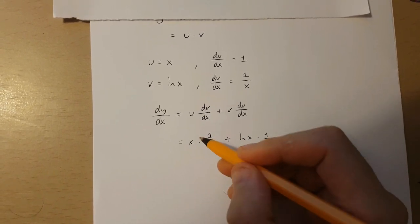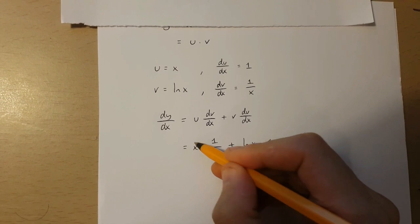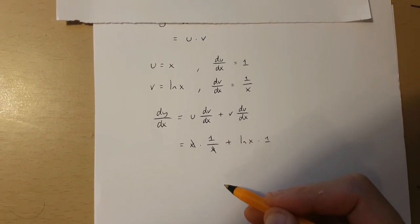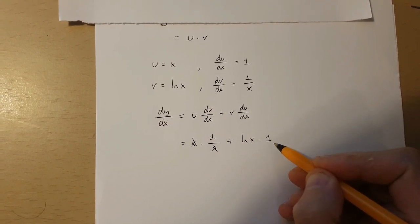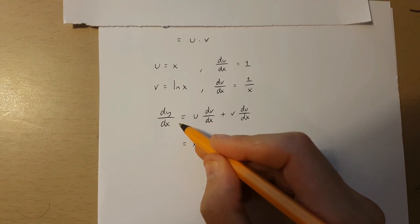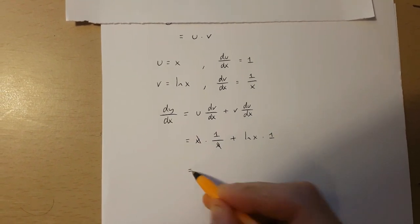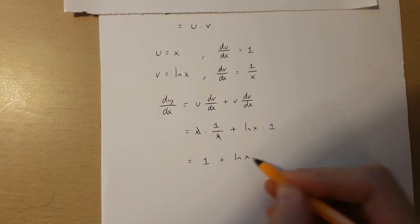Now, since I've got an x up here and an x down here, they cancel each other out. And ln x times 1 is ln x. So, dy over dx becomes 1 plus ln x.